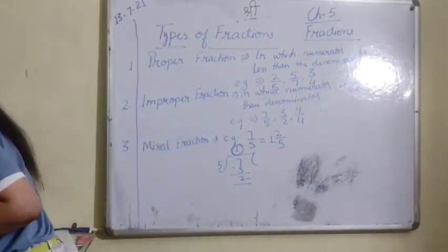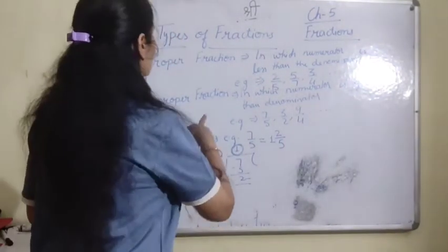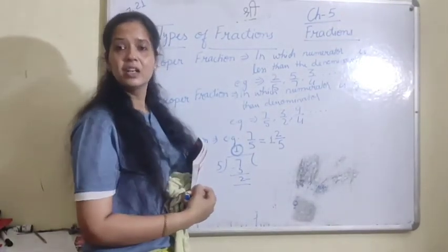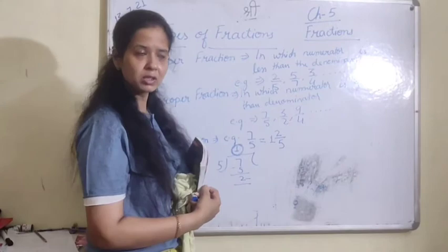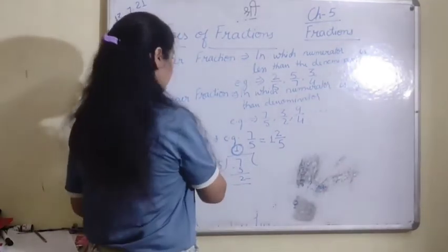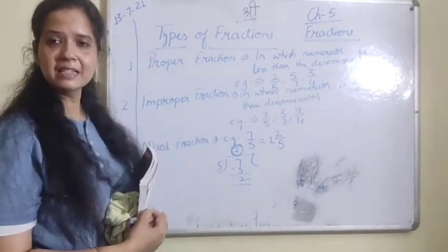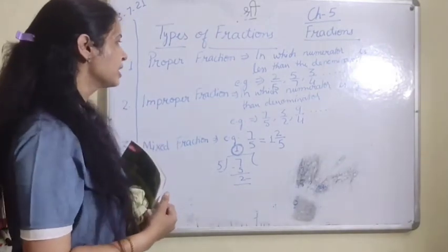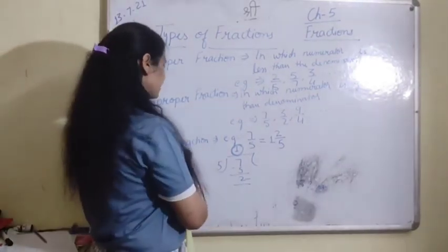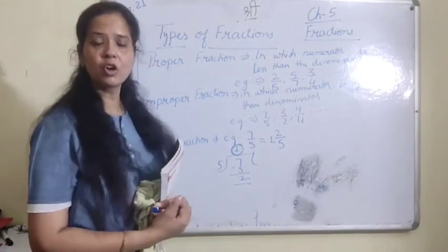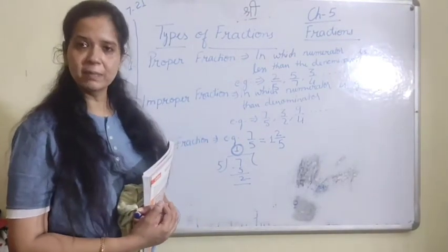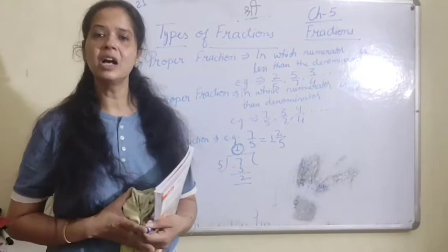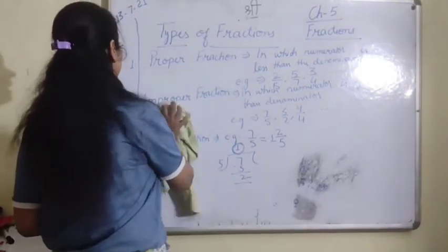So to summarize: proper fraction — in which numerator is less than the denominator; improper fraction — in which numerator is greater than the denominator; and mixed fraction — which is a mixture of a whole part as well as a fraction part. We always convert improper fraction into a mixed fraction. Let's start with the next topic.